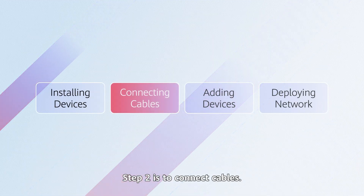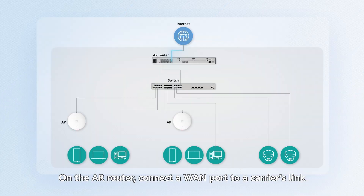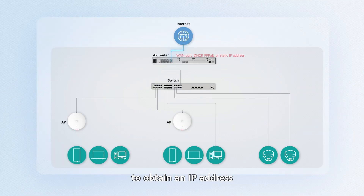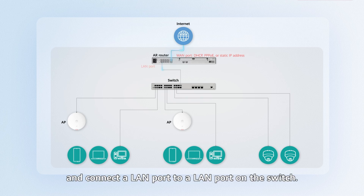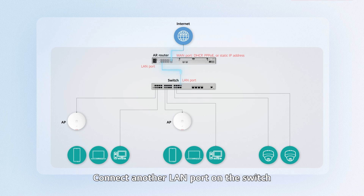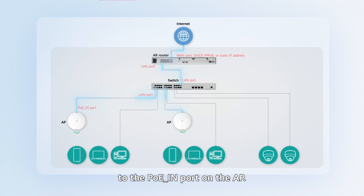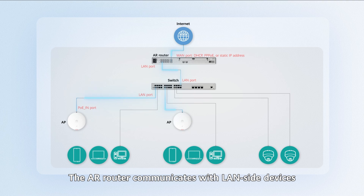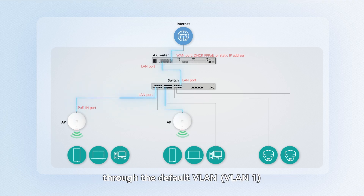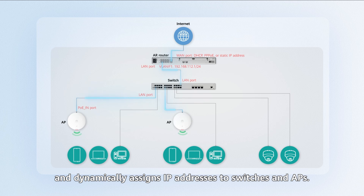Step 2 is to connect cables. On the AR router, connect a WAN port to a carrier's link to obtain an IP address for communication with external networks, and connect a LAN port to a LAN port on the switch. Connect another LAN port on the switch to the PoE-in port on the AP. The AR router communicates with LAN-side devices through the default VLAN, VLAN1, and dynamically assigns IP addresses to switches and APs.